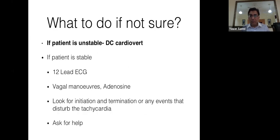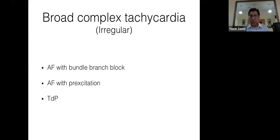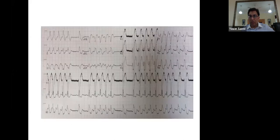If the patient is stable, perform a 12-lead ECG, seek cardiology or electrophysiology help, use vagal maneuvers or adenosine, and look for initiation and termination of events. Ask for help if unsure. Irregular broad complex tachycardia differentials include: AF with bundle branch block, AF with pre-excitation, and torsades de pointes.